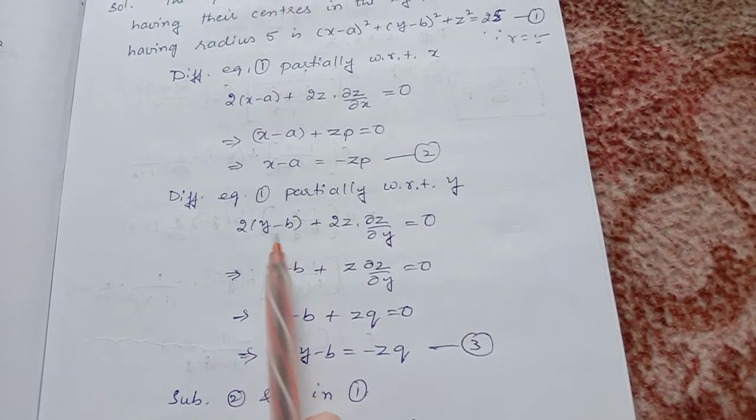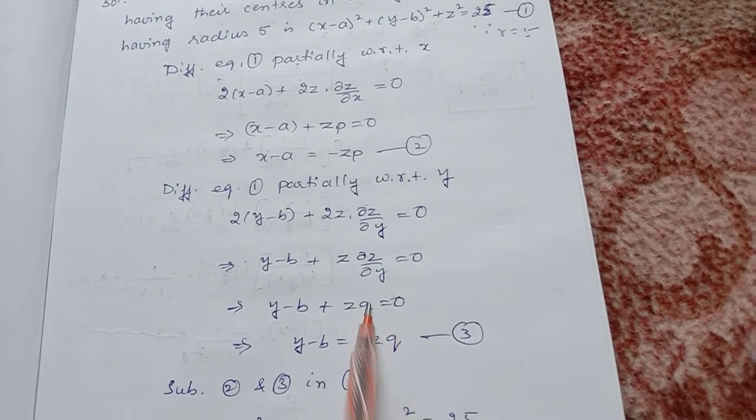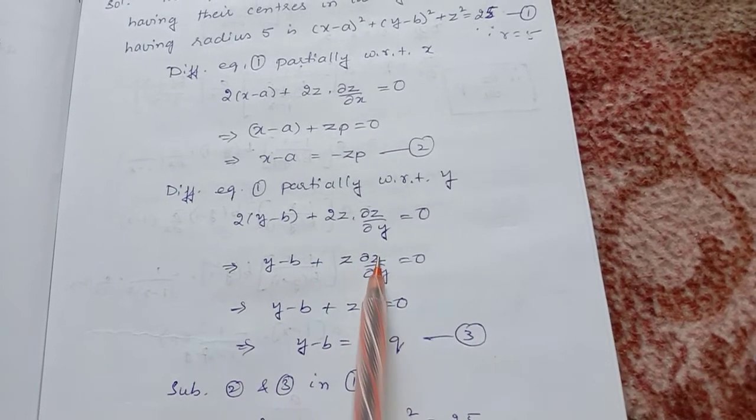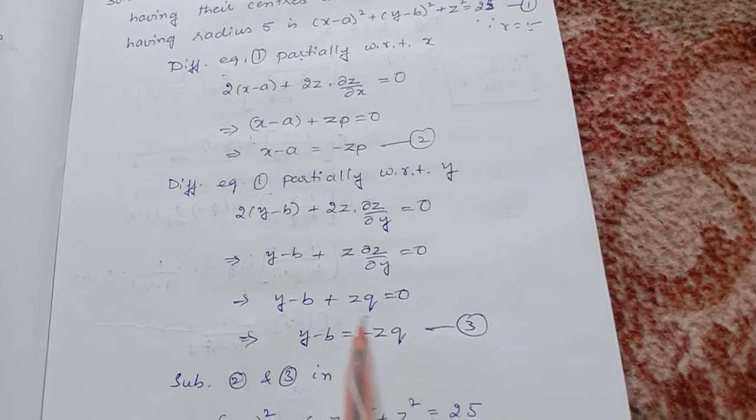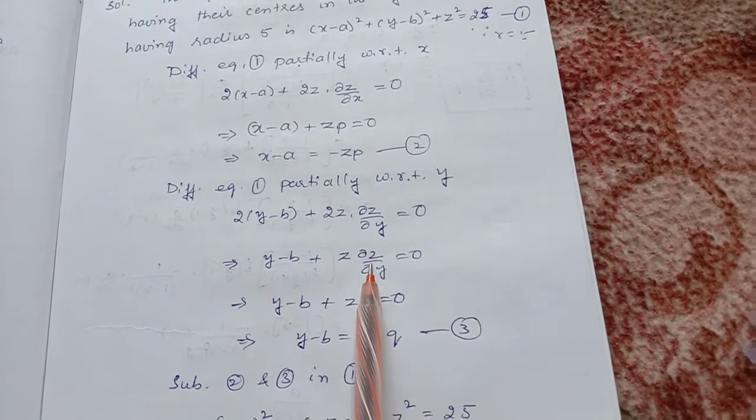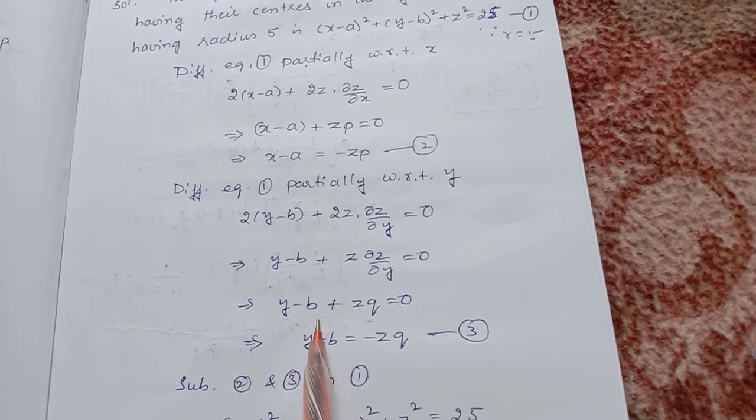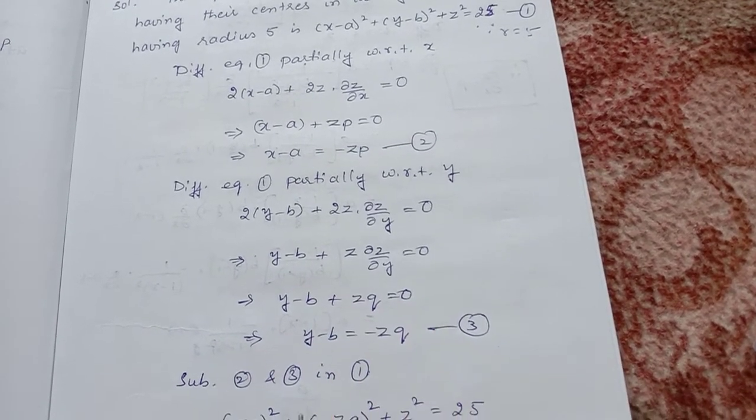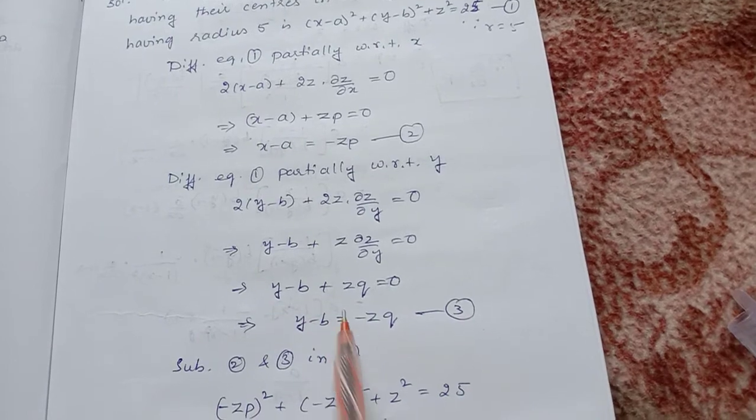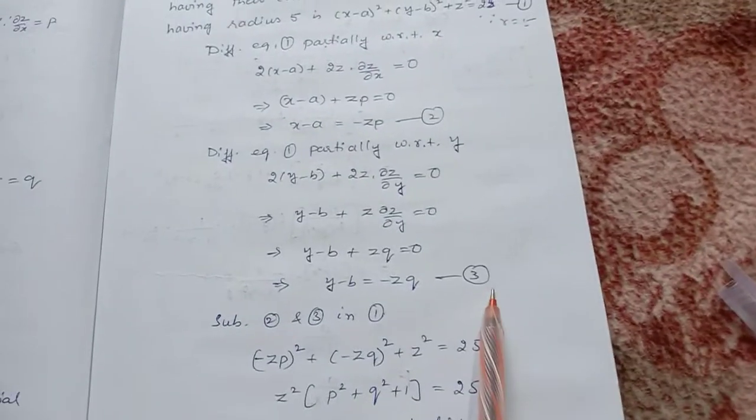We will be having (y - b) + z(∂z/∂y) equal to 0. We know ∂z/∂y value is q. Substituting ∂z/∂y as q, y - b + zq equal to 0, which implies y - b equal to -zq. This is equation 3.